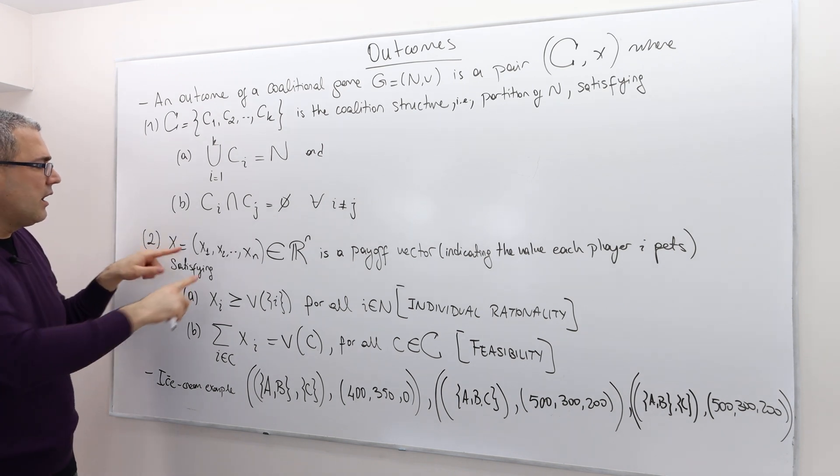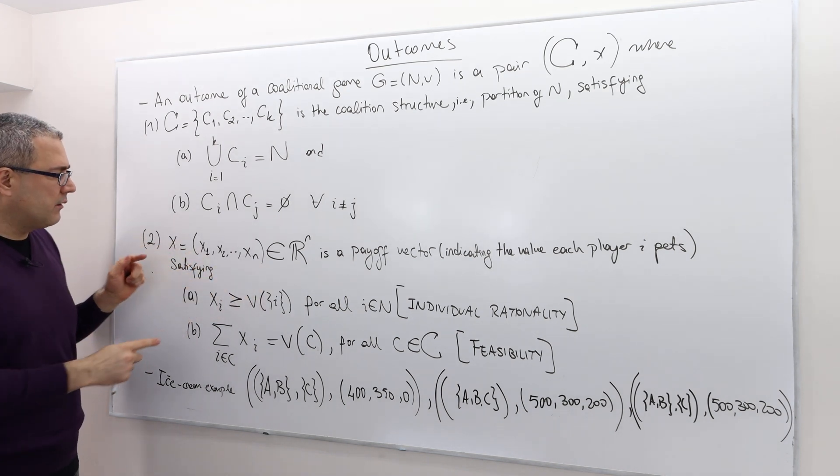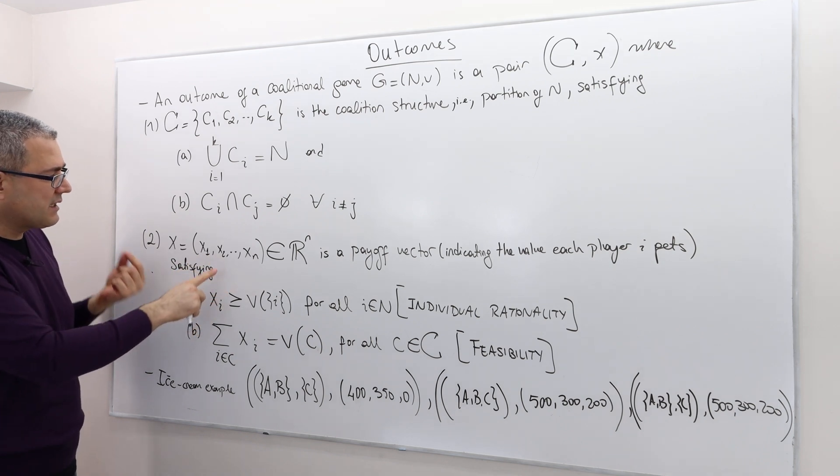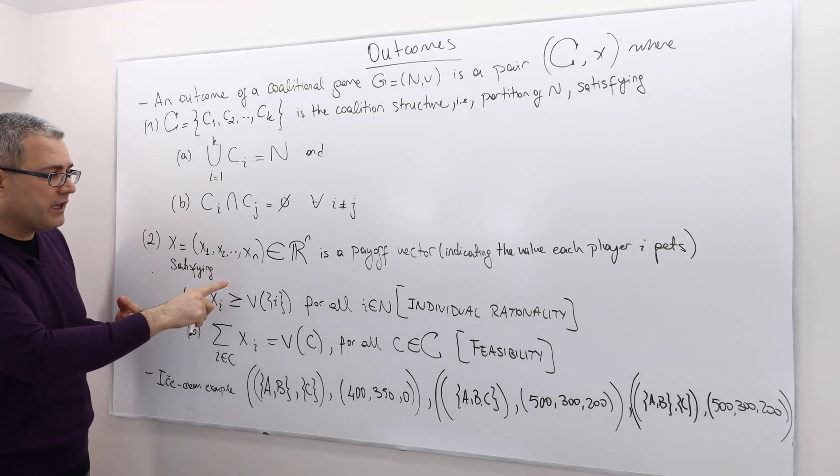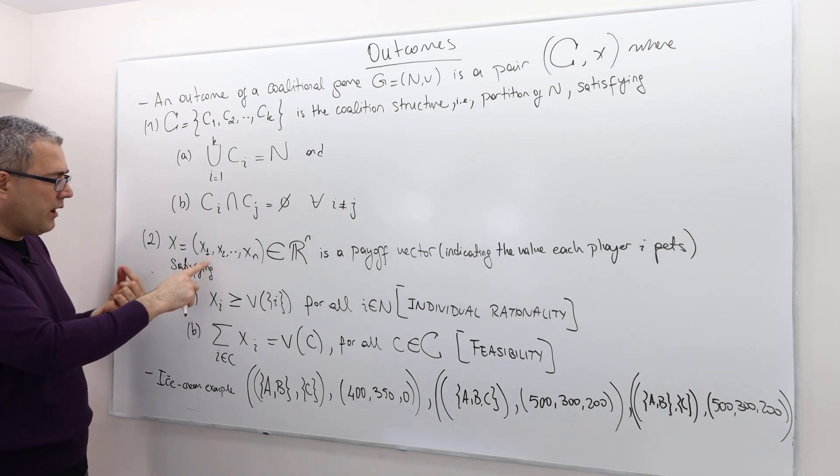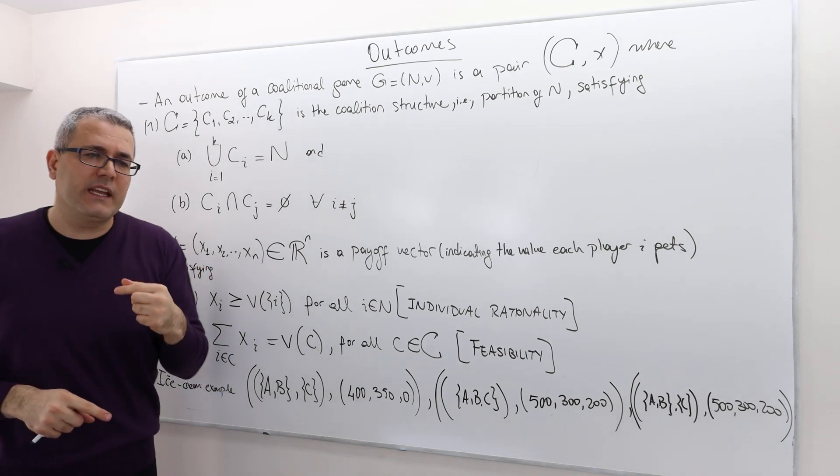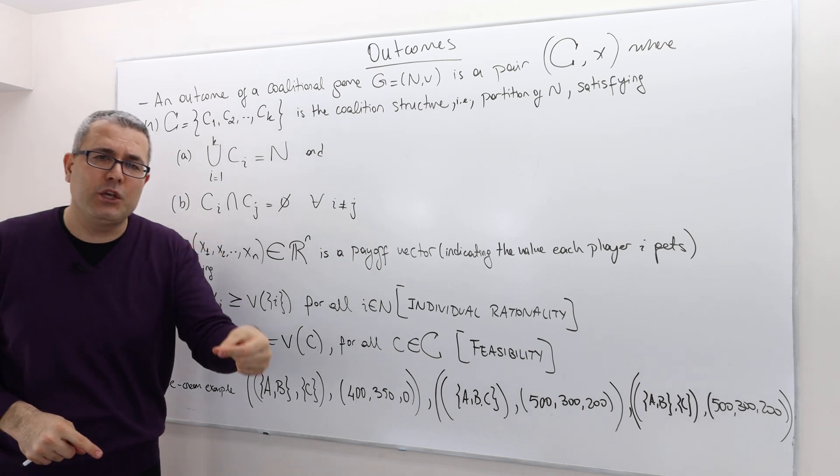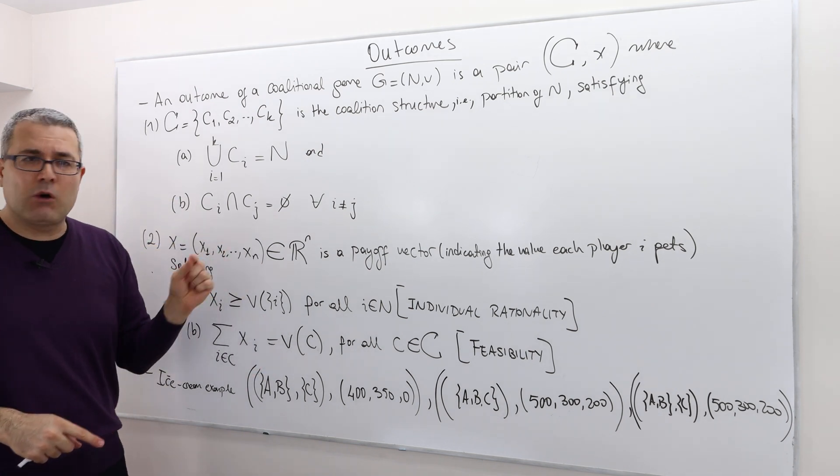Well, X is a vector of n-tuple. It basically tells us the payoff each player is going to get. So X1 is how much player 1 is going to get, X2, how much player 2 is going to get, and so on.